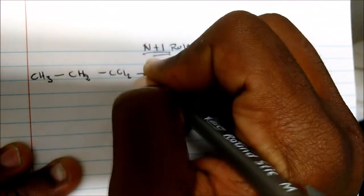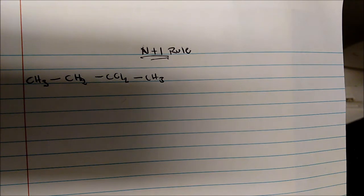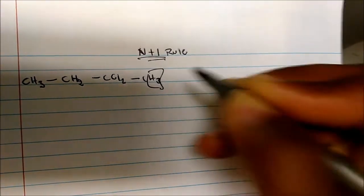So given a molecular formula, we're able to come up with a sensible bond line structure that goes along in line with the N+1 rule for degrees of unsaturation. So let's say we're given a molecule and we're asked to predict the multiplicities or splitting pattern around these three protons.